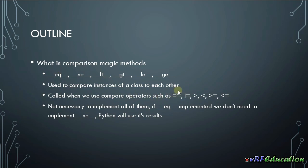For example, EQ will be called when we use the equality sign, and not equal will be called when we use the not equal sign. The interesting thing is that when we implement EQ, Python is going to use it for not equal as well — if we forgot to implement it, it will just reverse the result of equality. Python does it automatically, so we don't need to implement all of these methods. We just can implement a couple of them, for example EQ and less than, and then not equal or greater than will be called automatically based on the logic inside those two methods.